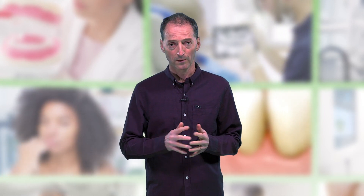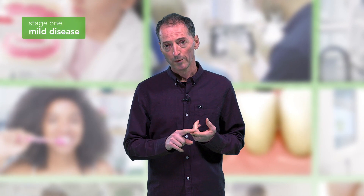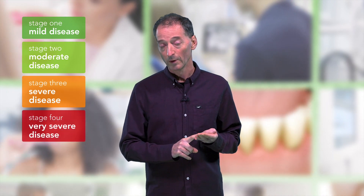Periodontitis is defined according to its extent — the number of teeth involved. Localised periodontitis involves less than 30% of teeth, and generalised periodontitis involves greater than 30%. There is also a molar-incisor pattern of bone loss as a third category. Once extent is established, we stage and grade the disease. Staging describes severity: stage one is mild, stage two moderate, stage three severe, and stage four very severe. Grading tells us about the rate of bone loss, which is important because the historical rate of disease is our biggest risk indicator for future progression.